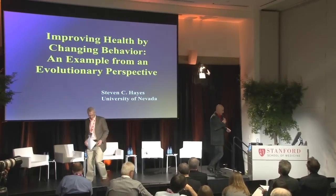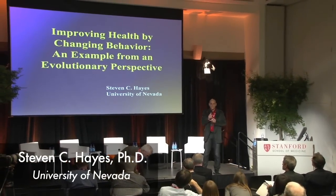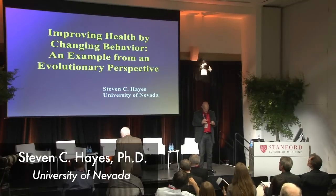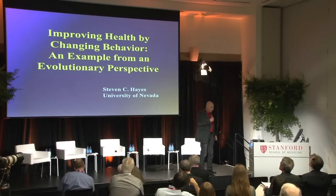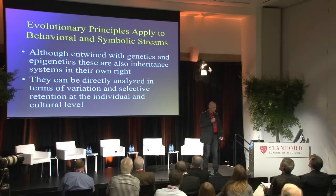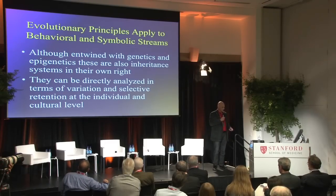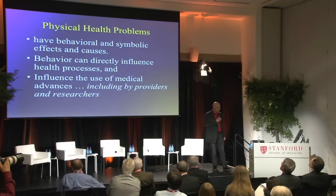Thank you for that, and I'm pleased to be here. It'll come a little bit out of left field, in the same way that you could think of cancer cells in the lifetime of an individual in an evolutionary sense. You can think of behavior and symbolic events in that way. They're intertwined with their genetic and epigenetic inherent systems, but they're inherent systems in their own right. They can be analyzed fairly directly in terms of variation and selective retention, both at the individual and at the cultural level.